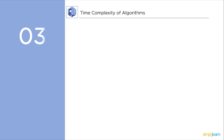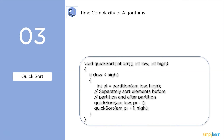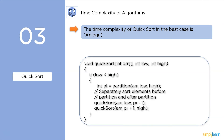Next up, quick sort. The time complexity of quick sort in the best case is O(n log n), and in the worst case it is O(n²).